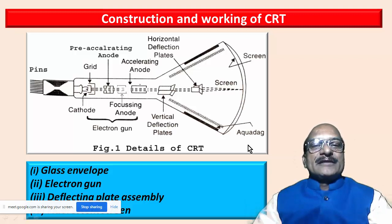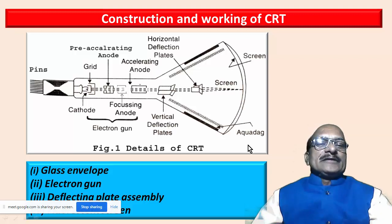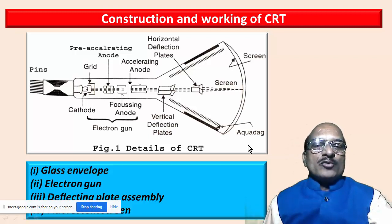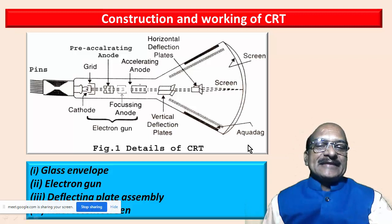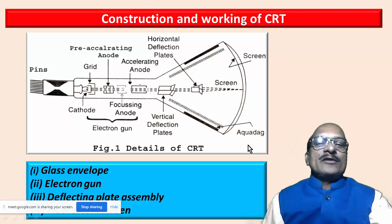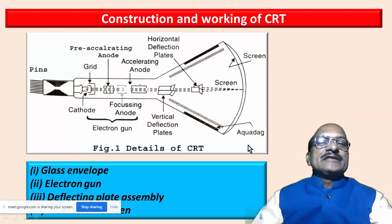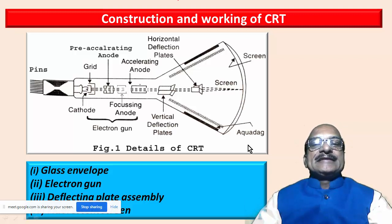Now let us see how electrons are produced in the cathode ray tube. As shown in this figure, we have shown one of the important parts of CRO — the complete instrument is called CRO — and one of its parts is the CRT, that is cathode ray tube. This is the important part of the CRO, usually called the heart of the CRO. By using the CRT we can produce the electron beam on the screen. The CRT is a funnel-shaped glass envelope.